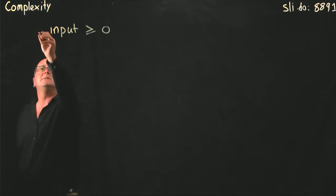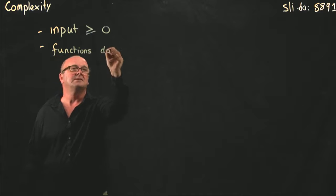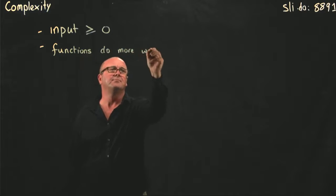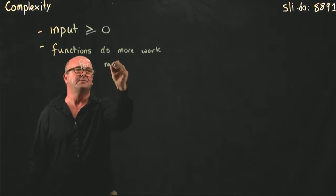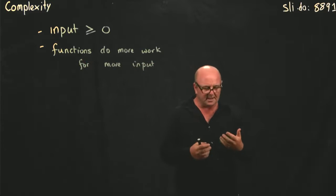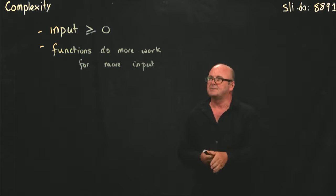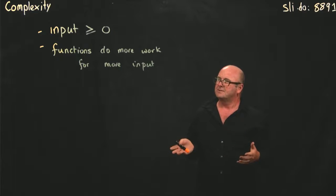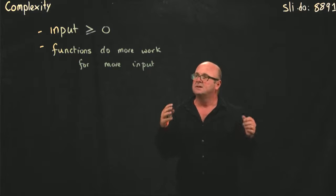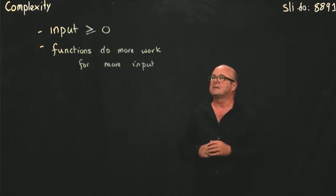In addition, one of our rules is that functions do more work for more input. If I'm providing more things, it's got to do more work. You can imagine an algorithm where if you provide more input it does less work, but that's not how most algorithms work. Generally, we think that if there's more things to do, it's going to take longer. Functions do more work for more input.